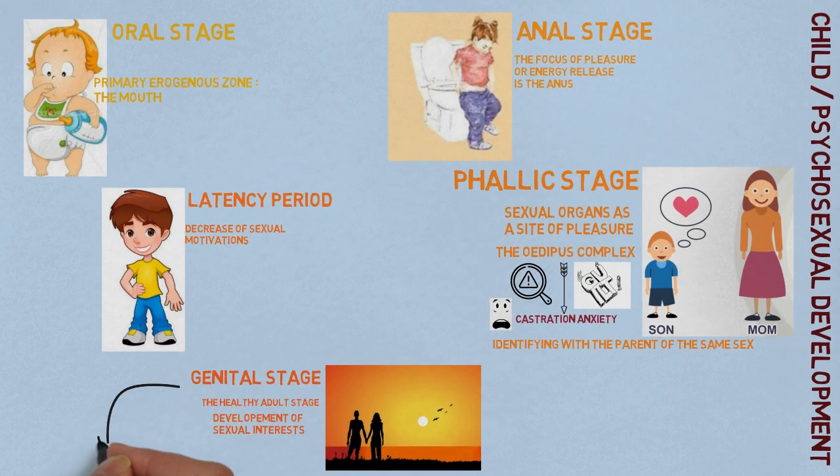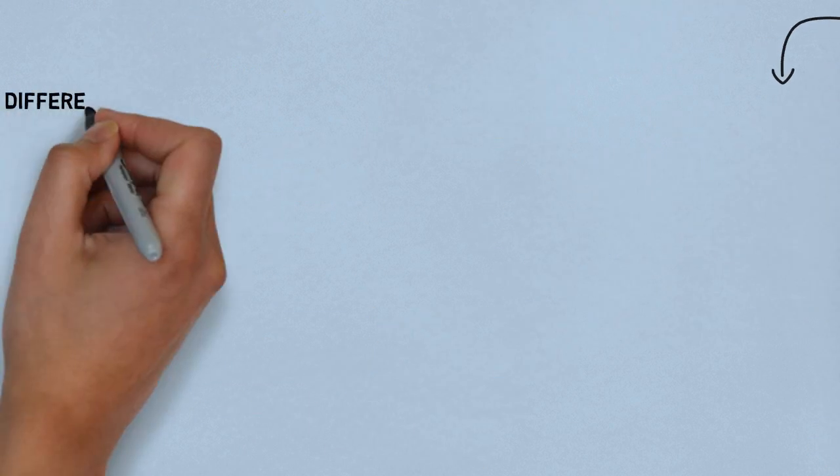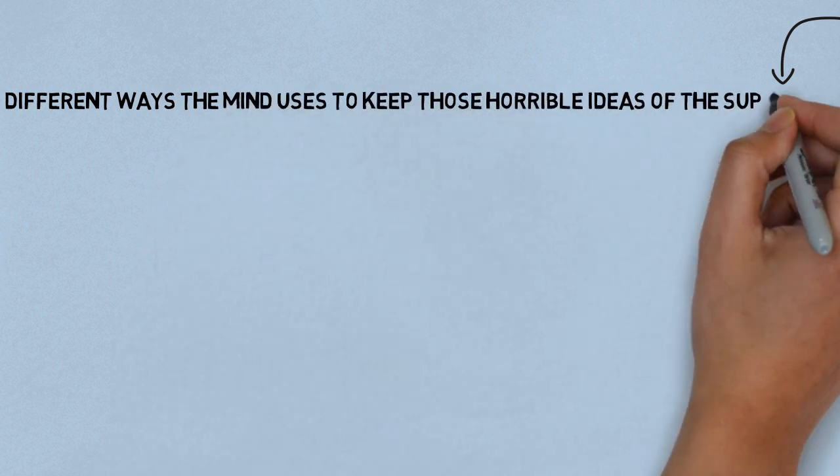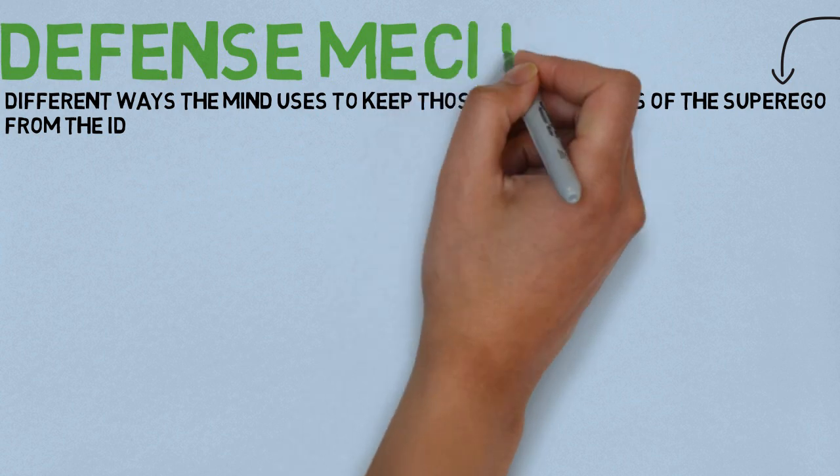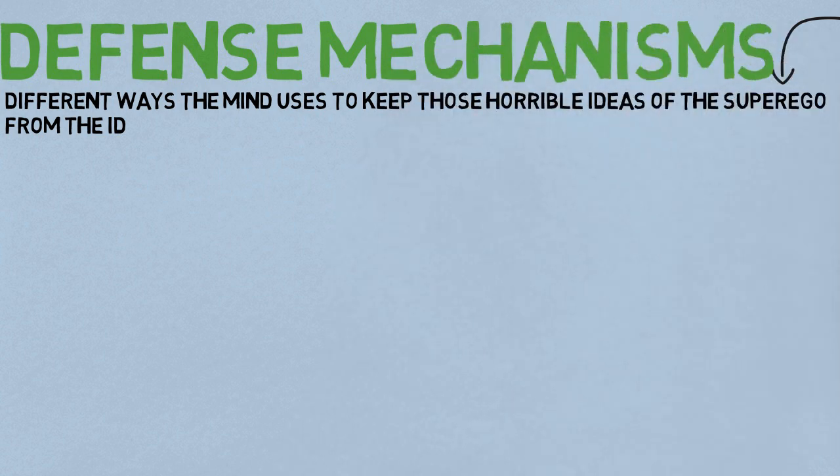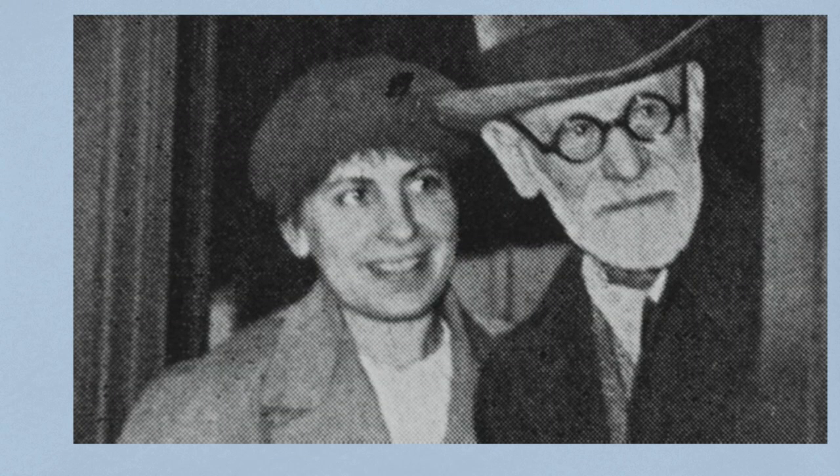Now, Freud described a lot of normal life in terms of different ways the mind chooses to keep those horrible ideas of the superego from making their way to consciousness, and he called these defense mechanisms. You are defending yourself against the horrible parts of yourself. Anna Freud was to identify those mechanisms appearing in her father's work, Sigmund Freud.